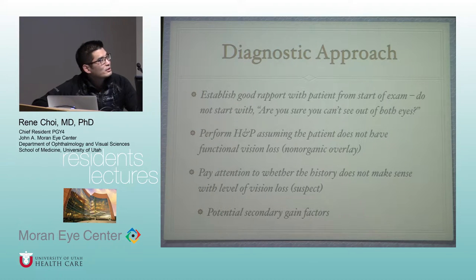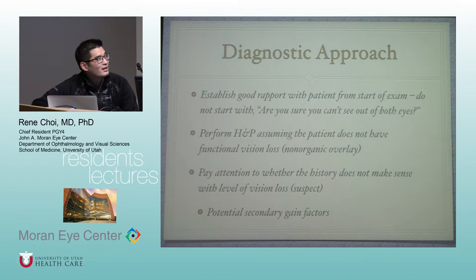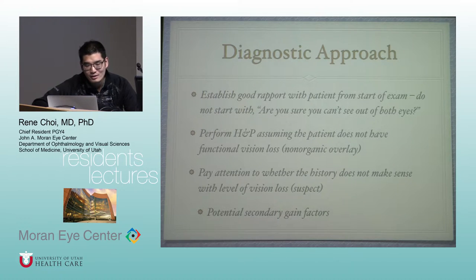For the diagnostic approach, establish good rapport from the start of the exam. Don't lead with skepticism — just be normal. Perform a full history and physical assuming the patient does not have functional vision loss. Treat it seriously. Then pay attention to whether the history does not make sense with the level of vision loss — that's when you should start suspecting functional vision loss.